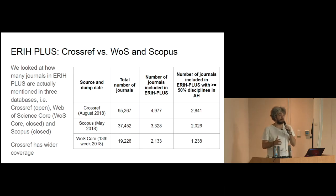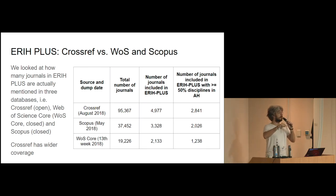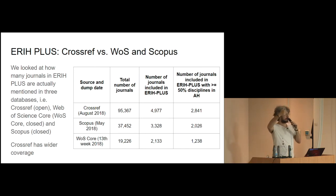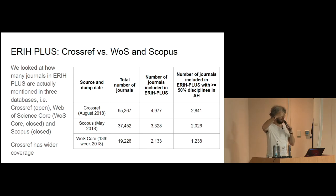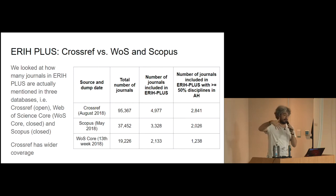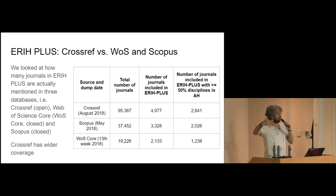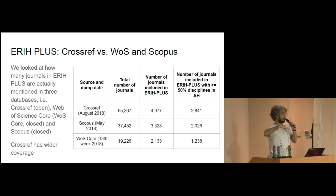We then looked at how many of these journals were present in three different databases containing citations: Crossref, Scopus, and Web of Science. We found that Crossref has wider coverage of arts and humanities journals than the other two commercial services.